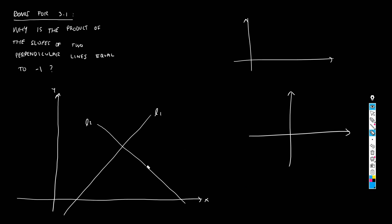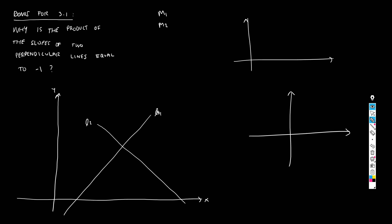We're going to work in reverse. We'll first assume we have two perpendicular lines, line 1 and line 2. That means all of these angles — this, this, this, and this — each of these angles is 90 degrees. This big triangle in here is a right triangle. This is its right angle. Now, the slope of L1 is m1 and the slope of L2 is m2.